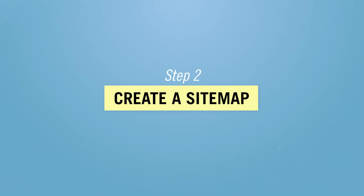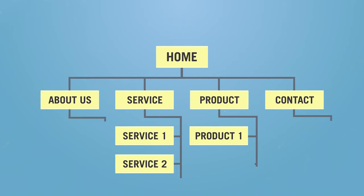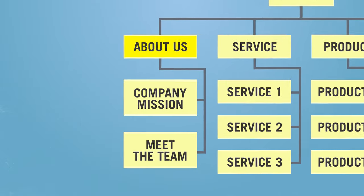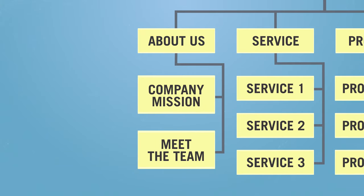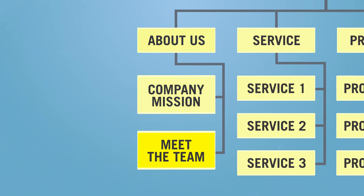Step 2: Create a sitemap. Based on the content groups you've come up with, you'll now create a sitemap. A sitemap is basically a visual representation of all the different content areas on your website. It looks like a family tree and establishes a content hierarchy, with parent pages and child pages. For example, at the top level you might have a home page, a child page could be the About Us page, and then another child page stemming from that, such as Company Mission or Meet the Team.